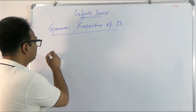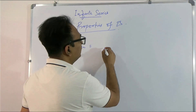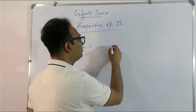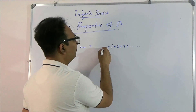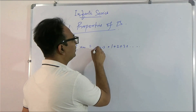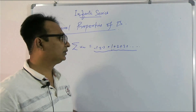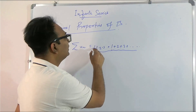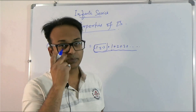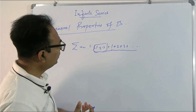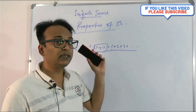The second property tells us that if a series has terms that are generally positive — say 1 plus 2 plus 3 plus — and there are also some negative terms, the series will still remain positive even if there are a few negative terms. This follows from the first property.